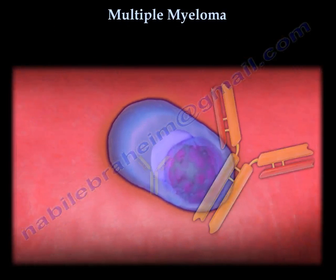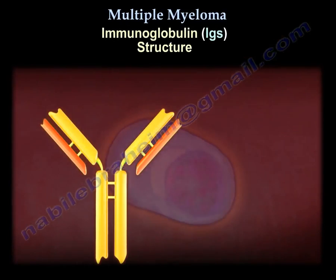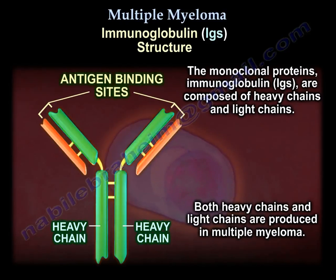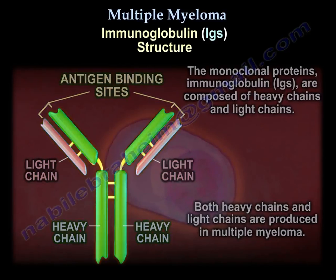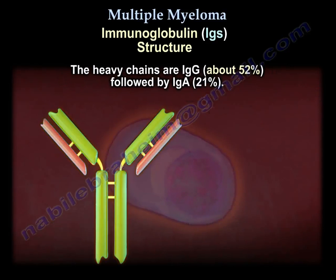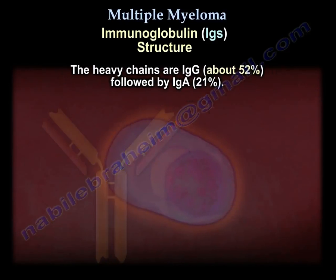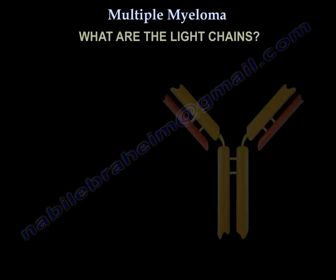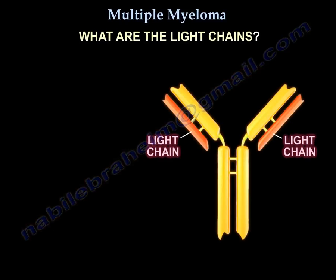Monoclonal proteins are immunoglobulins (Igs), composed of heavy chains and light chains. Both are produced in multiple myeloma. The heavy chains include IgG at 52% and IgA. The light chains are kappa or lambda.